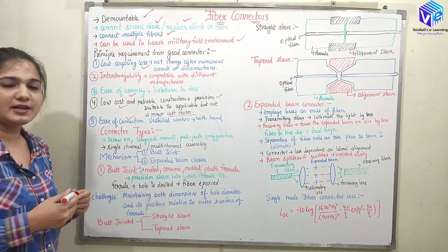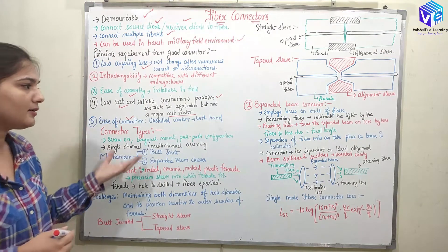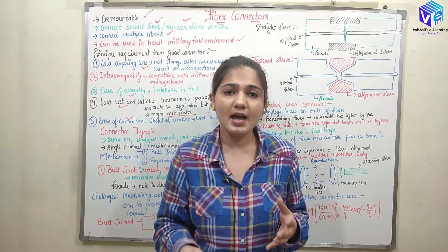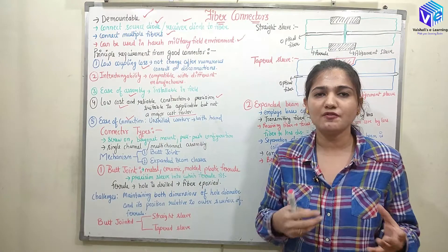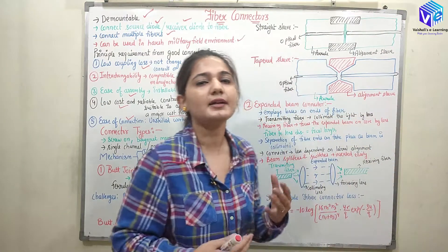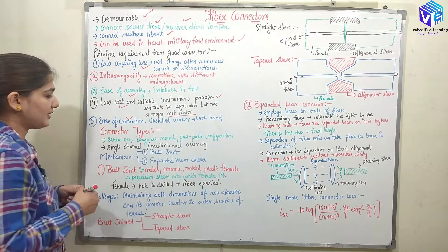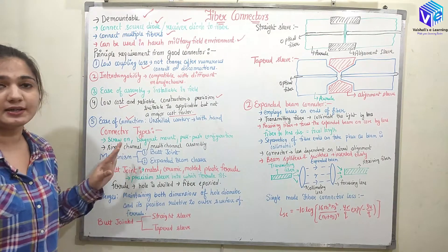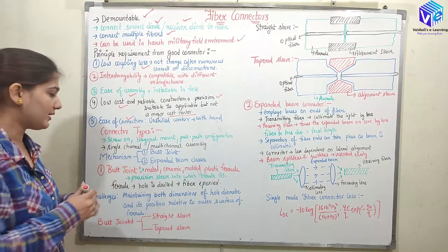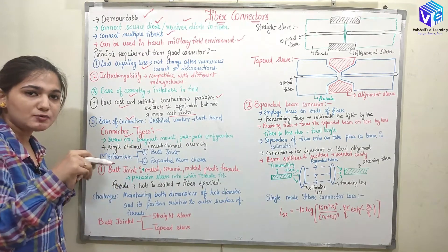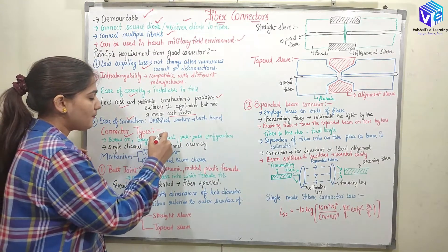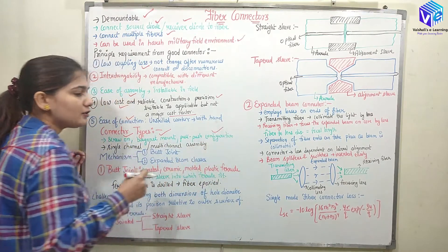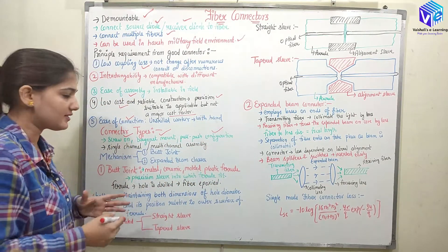We should also have ease of connection, where unskilled workers can easily connect two different parts using connectors, even by hand without technical machines. So now coming to connector types: we have screw-on connectors which use various screws, bayonet mount connectors, and the push-pull configuration in which push-pull action connects the different parts.